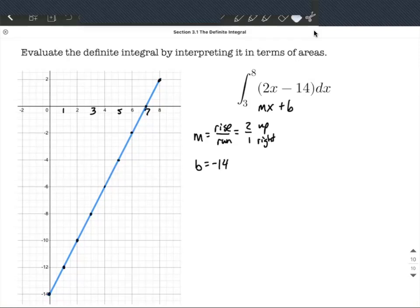And now we want to interpret it in terms of areas. So the next thing I'm going to go ahead and do is look at our endpoints, right? Our endpoints for this integral are 3 and 8. So I don't care all the way over here to 0 for an x value or 1 as an x value or 2 as an x value. I really want to look from 3 all the way to 8.